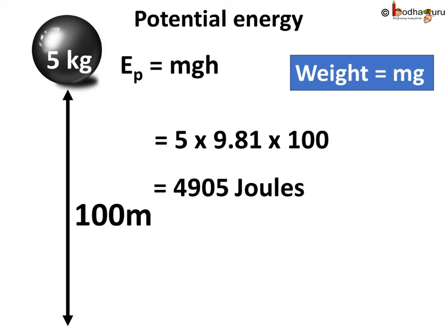We know potential energy is given by the formula mgh. Now, the weight of the object is mg, and m is equal to 5 kg, and g, as we know, the value is 9.81 meters per second squared.